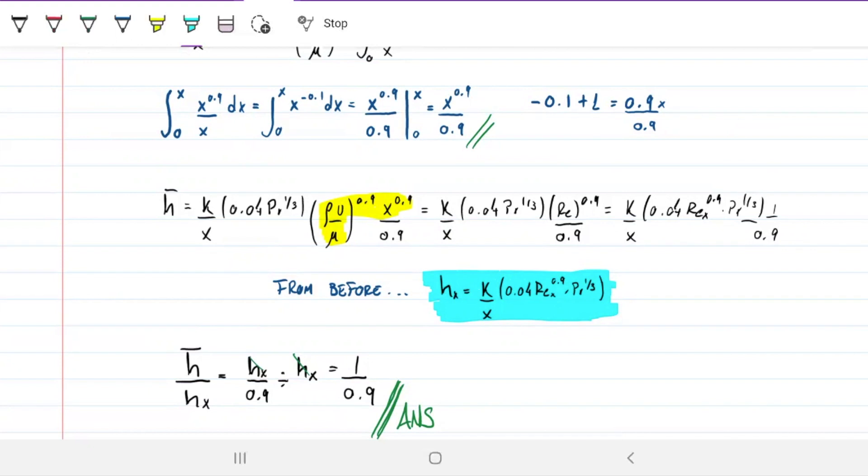But why do we want to know that the average over the local is 1 over 0.9? Because think about it, if you're trying to solve a heat transfer problem and you have one of these situations, what you can do is you can find the local heat transfer on one spot of that plate, can measure the local heat transfer, and then you can use that to the relationship of 0.9 to generalize for the whole thing. Because you know, the average will be a ratio of 0.9 to the one you found. So you can use that 0.9 to find what is the average heat transfer coefficient, and with that average heat transfer coefficient, you can find the actual heat transfer for the whole plate.